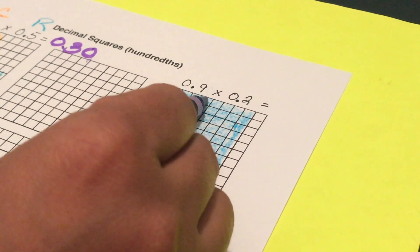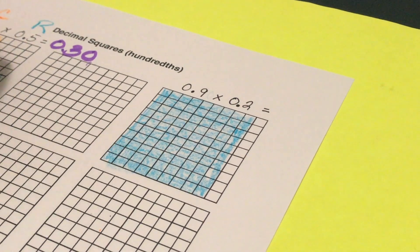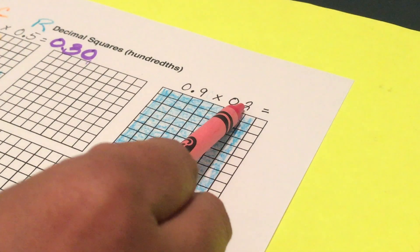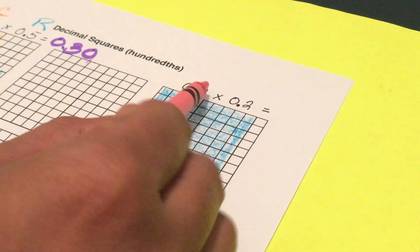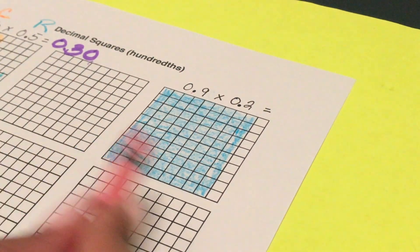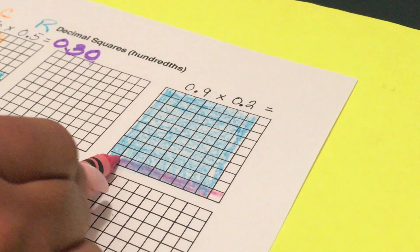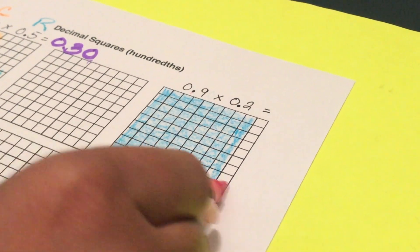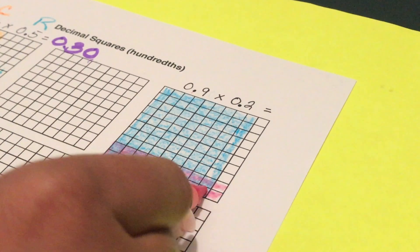All right that is nine tenths. Ten, twenty, thirty, forty, fifty, sixty, seventy, eighty, ninety or nine tenths. And now I am going to shade in two tenths the opposite direction. It doesn't matter if this is your row or this is your column you're going to get the same answer. So then I'm going to go over this and do one, two.